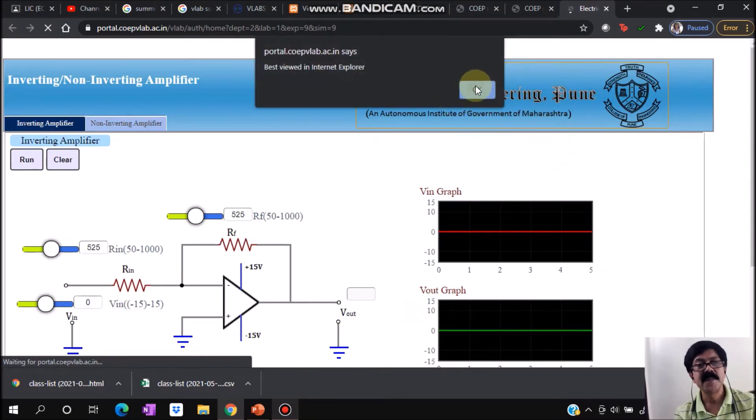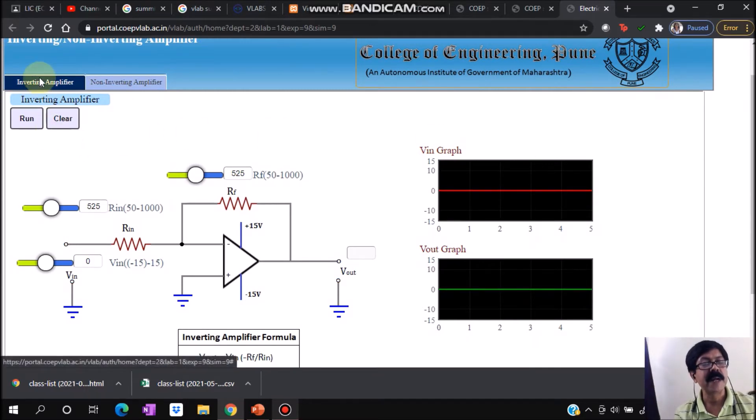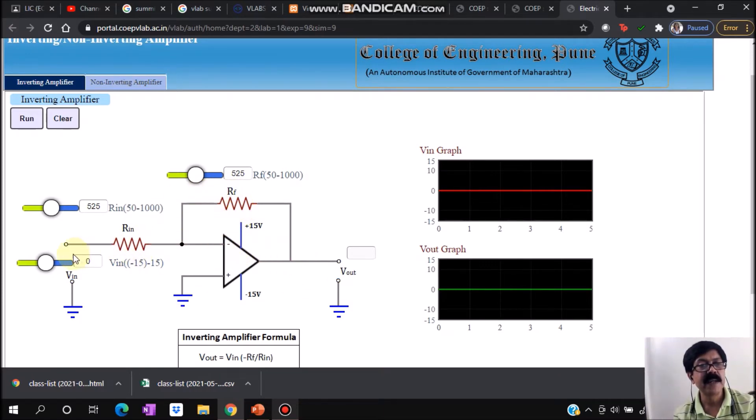Here you can observe an example. Two practicals are there: inverting and non-inverting. We'll see one by one. Here you can see a feedback resistor is there in the inverting terminal and then input is given.